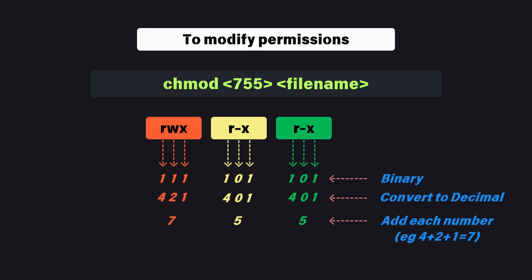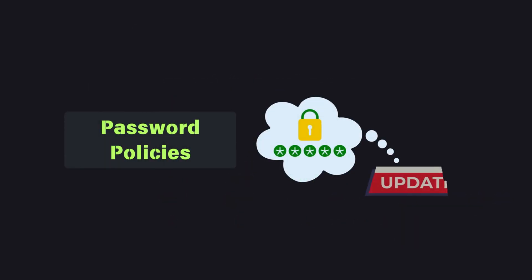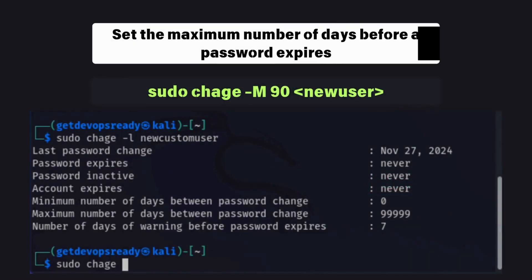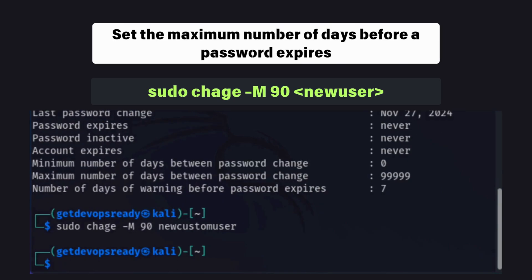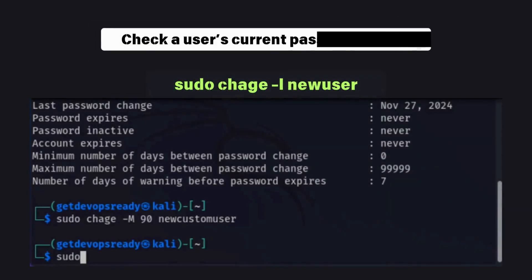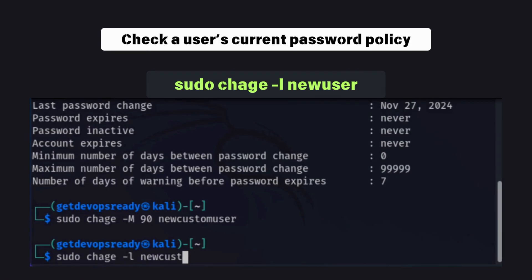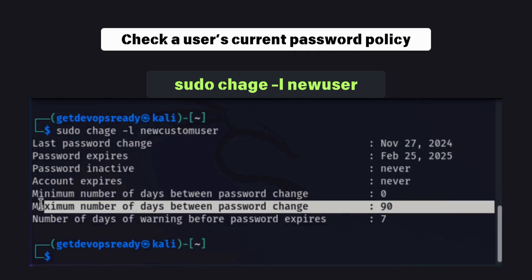Security is key, and setting password policies ensures users update their passwords regularly. To set the maximum number of days before a password expires, use the chage command followed by the -M flag. To check a user's current password policy, use the -l flag. These policies are critical for maintaining system security.